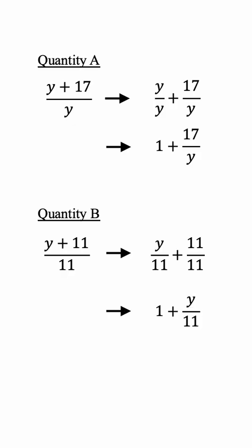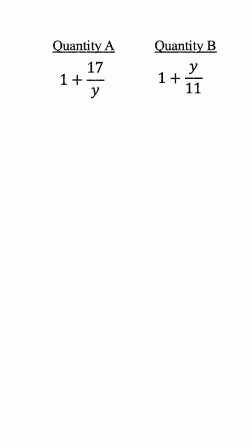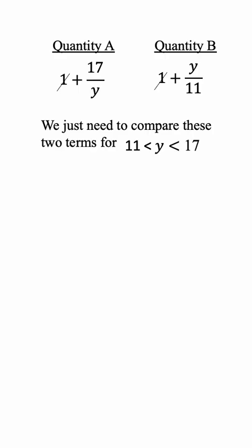These two quantities are then after simplification these two. We have 1 in both sides of the expression, we can easily get rid of that, and we just need to compare these two terms for y between 11 and 17.